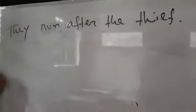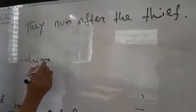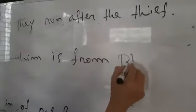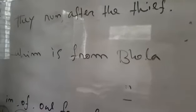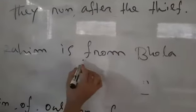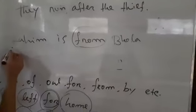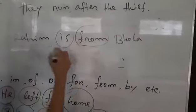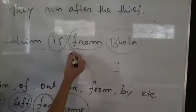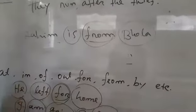The next example: Rohim is from Bhola. Here the word 'from' is preposition. In this sentence: Rohim is subject, is is verb, Bhola is location. That is why here the word 'from' is preposition. These are examples of simple prepositions.